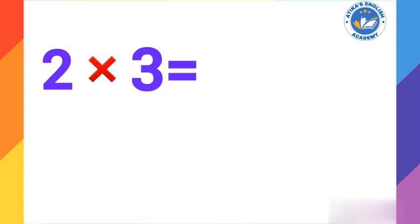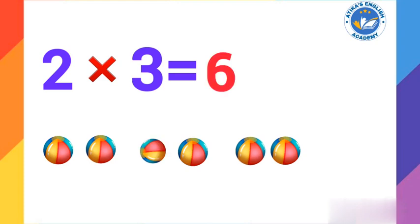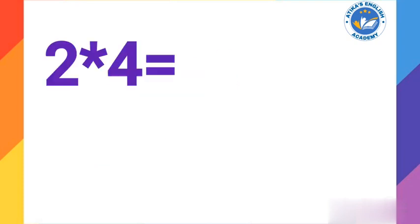2 times 3 equals what? Let us count: 2, 3, 4, 5, 6. 2 times 3 equals 6.